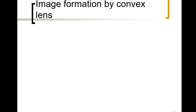For image formation when the object is inside F, using a convex lens: the first ray is parallel to the principal axis and passes through focal length F, but this time it is extended. The second ray passes through the center and is also extended. The intersection is located on the same side as the object, and the image is larger than the object — it is magnified. This happens with a magnifying lens placed near the object, producing a virtual, magnified image.